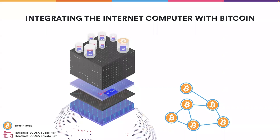This component also offers canisters the ability to query their public keys. Canisters can have an infinite number of ECDSA keys using this scheme, because keys are derived on the fly when computing signatures or requesting public keys. This public key can be used by the canister to derive a Bitcoin address, and that Bitcoin address can be used by anybody to send Bitcoin transactions to it — which means this first challenge is resolved.